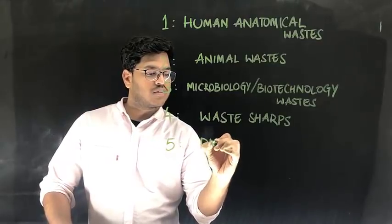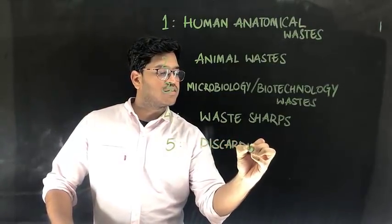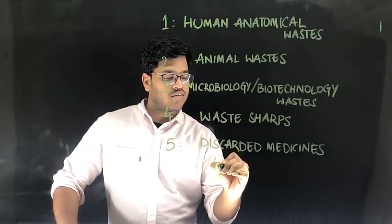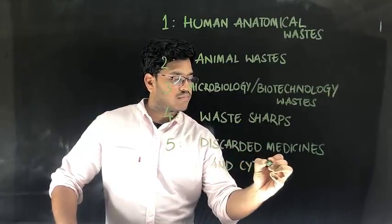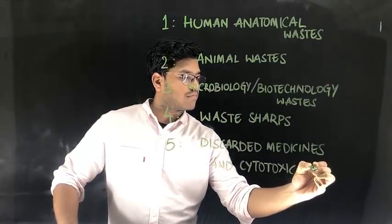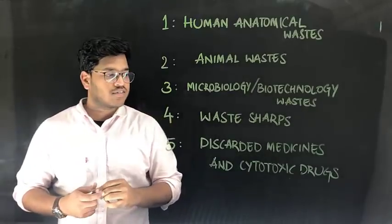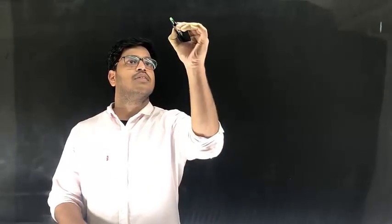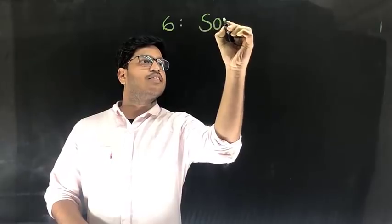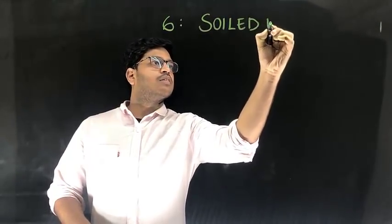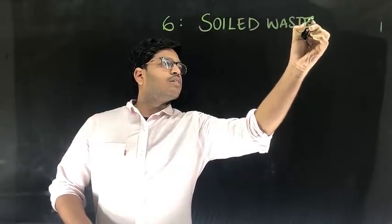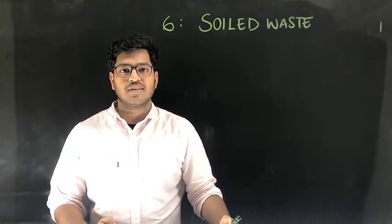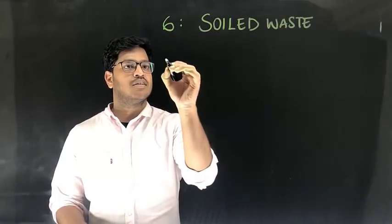Category 5 includes discarded medicines, including outdated medicines and cytotoxic drugs. After category 5, it's category 6 which includes soiled waste. Soiled waste is that waste where the article is contaminated with body fluids such as blood, pus, or sweat.